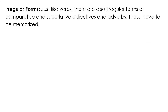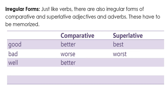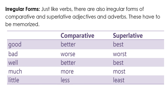Irregular forms. Just like verbs, there are also irregular forms of comparative and superlative adjectives and adverbs — these have to be memorized. We have a handy chart to look at them. Good: comparative is better, superlative is best. Bad: comparative is worse, superlative is worst. Well: comparative is better, superlative is best, just like good. Much: comparative is more, superlative is most. Little: comparative is less, superlative is least.